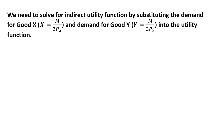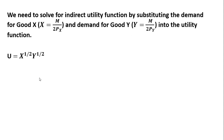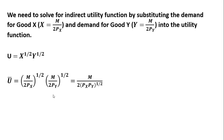We also need to solve for the indirect utility function by substituting the demand for good x and the demand for good y into the utility function. The demand for good y gives us this result. Plugging both demand functions into the utility function — where we have x we put in the demand for x, and where we have y we put in the demand for y — and simplifying, we get the indirect utility function.